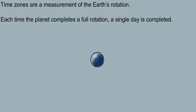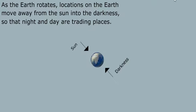Time zones are a measurement of the Earth's rotation. Each time the planet completes a full rotation, a single day is completed. As the Earth rotates, locations on the Earth move away from the Sun into the darkness, so that night and day are trading places.